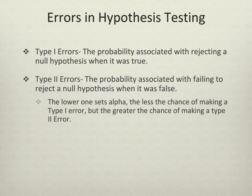Type 2 errors are the probability associated with failing to reject a null hypothesis when it was false. This is more likely to occur if you set your p-value at 0.01, the 1% level. In this case, you might get a result of 0.02 or 0.03 and fail to reject the null when in actuality there is a statistically significant relationship. The lower one sets the alpha, the less the chance of making a Type 1 error, but the greater the chance of making a Type 2 error.